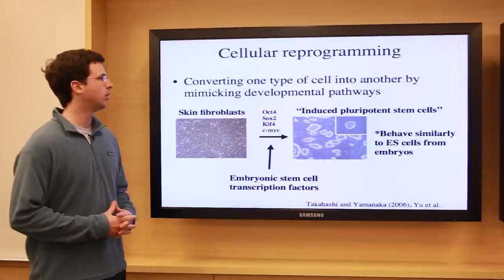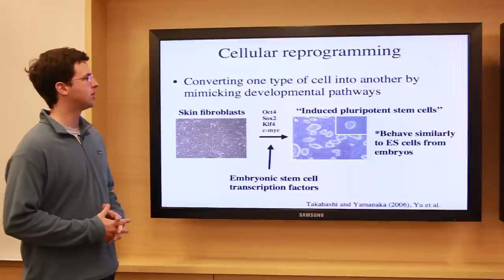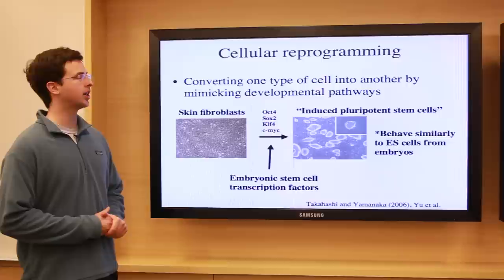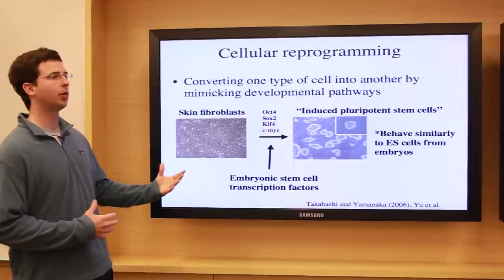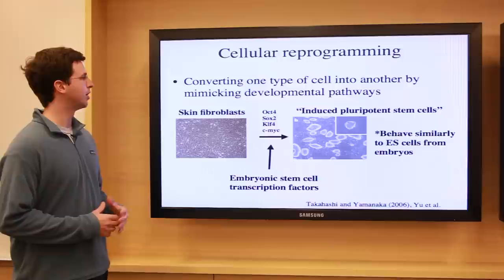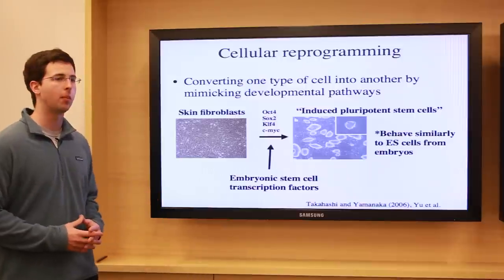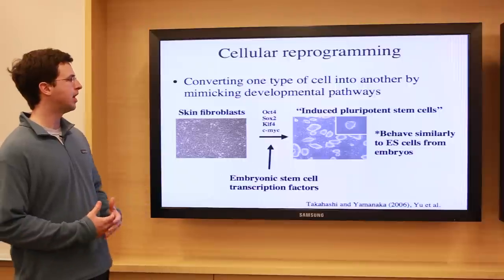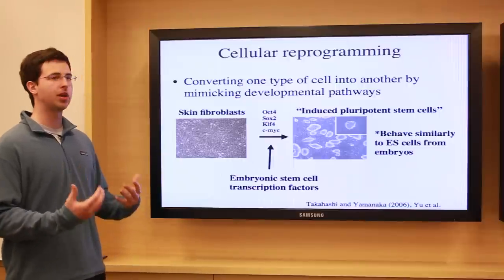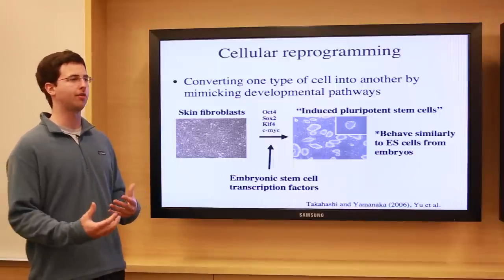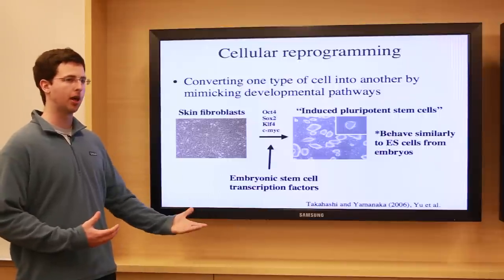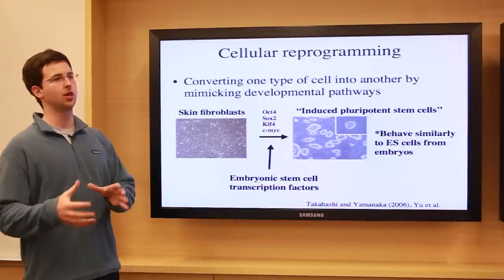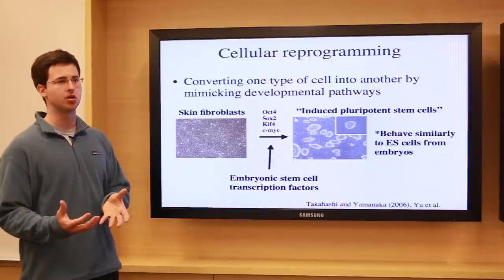A key way around this problem was a critical discovery made by Shinya Yamanaka in 2006 concerning what's called cellular reprogramming. Cellular reprogramming is a way of converting one type of cell into another by mimicking developmental pathways — usually by expressing transcription factors that are important for making a cell in the embryo. We can express those transcription factors in another cell type and force that cell type to turn into a cell type that we're interested in.